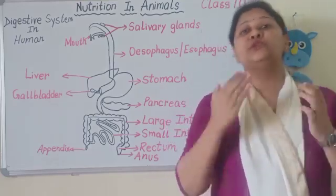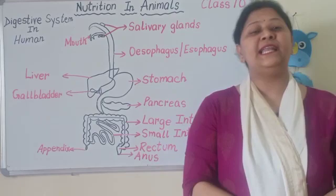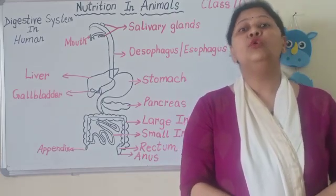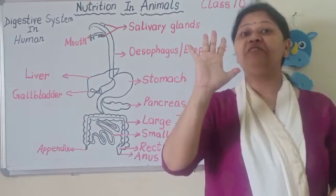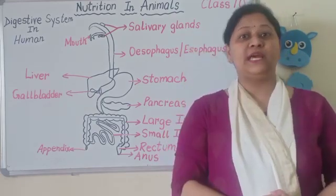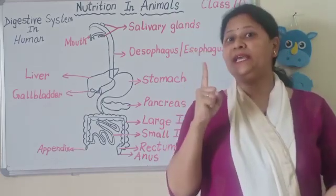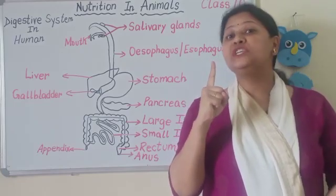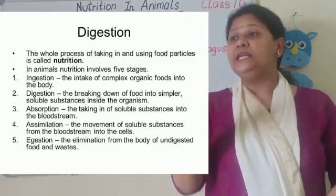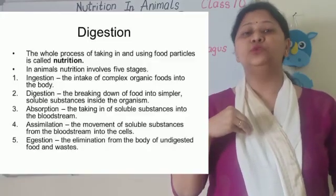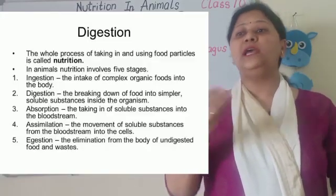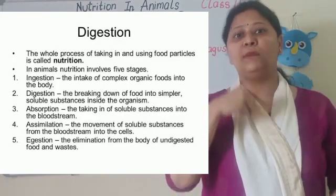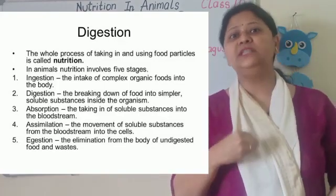So basically jo nutrition hai in animals, uska basic five steps hote hain. The first one is ingestion — ingestion ka matlab taking in food inside, apne andar food ko lena mouth ke through.